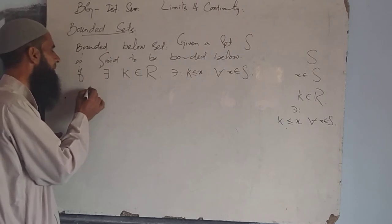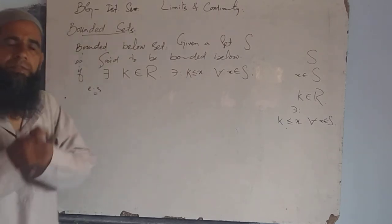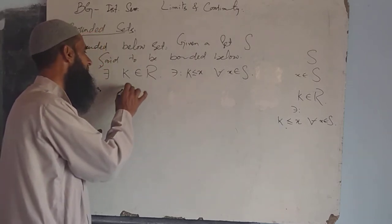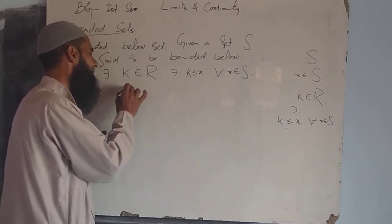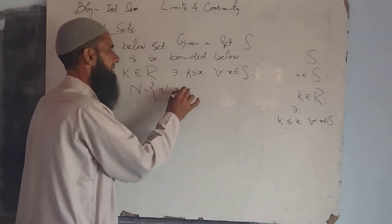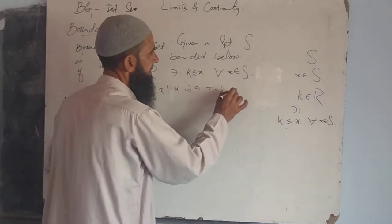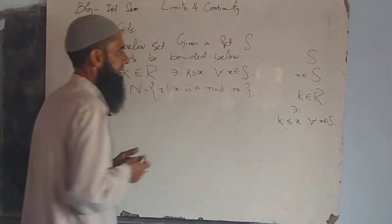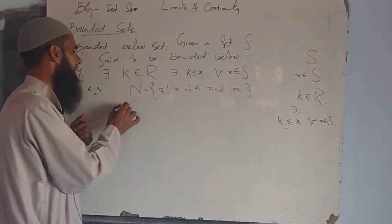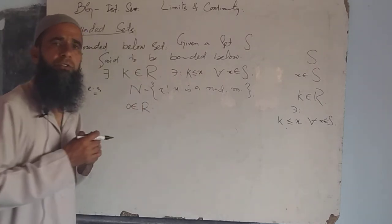If we consider the set of natural numbers, denoted by N, it contains all X such that X is a natural number. Clearly, 0 belongs to R such that X is greater or equal to 0 for all X belonging to S.